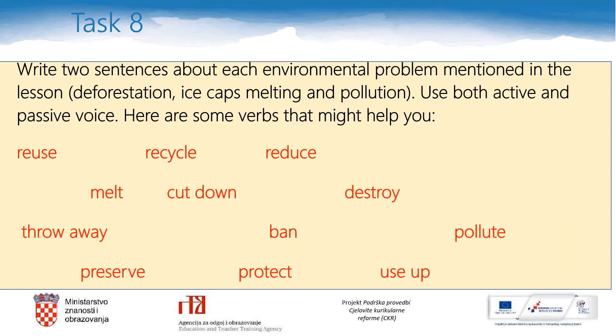You will write two sentences about each of these environmental problems mentioned in the lesson: deforestation, ice caps melting, and pollution. You will use both active and passive voice — active voice in one sentence and passive in the other. Here are some verbs that might help you: reuse, recycle, reduce, melt, cut down, destroy, throw away, ban, pollute, preserve, protect, use up. If you don't know some of them, you can always check their meaning in the dictionary.